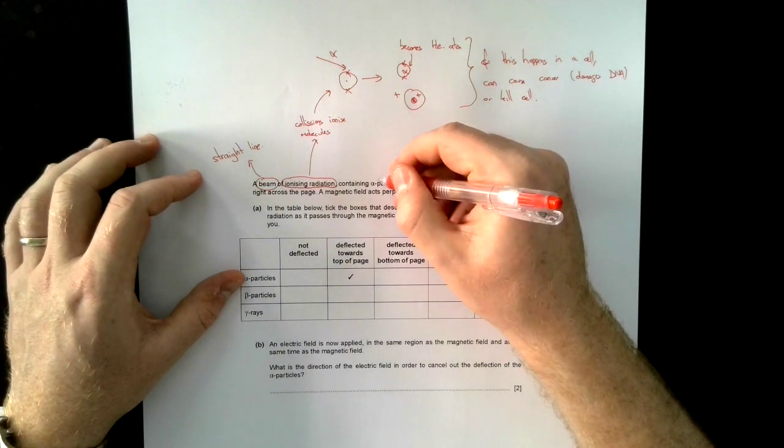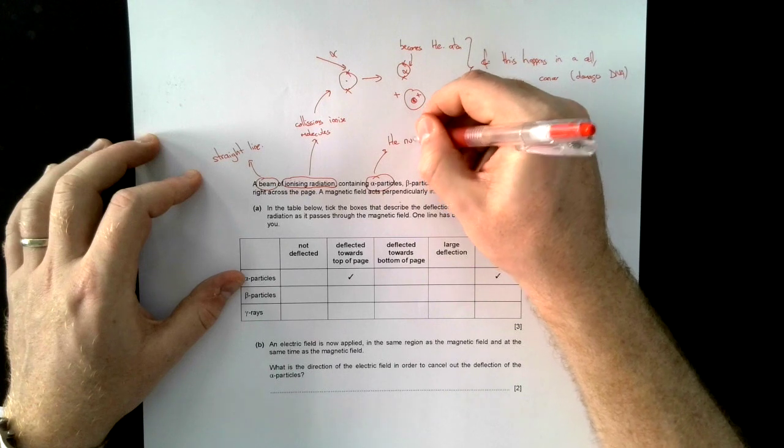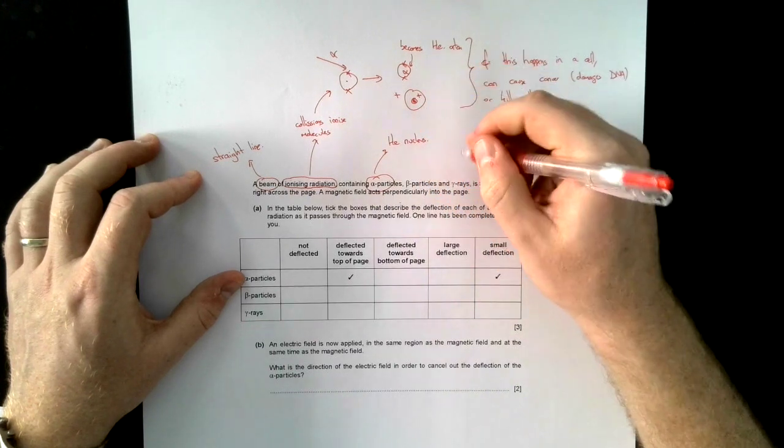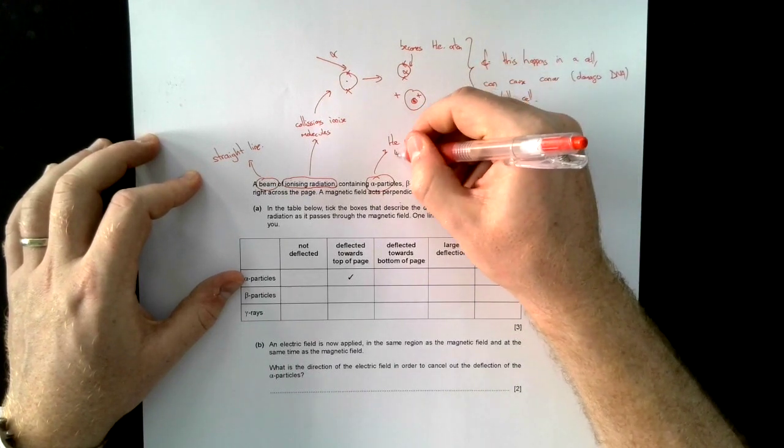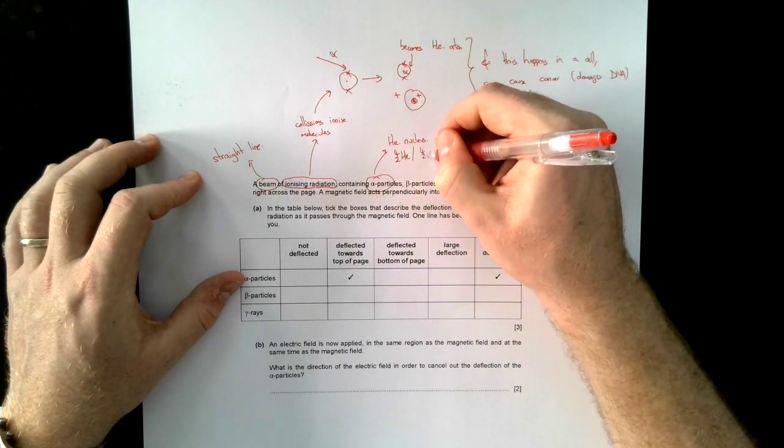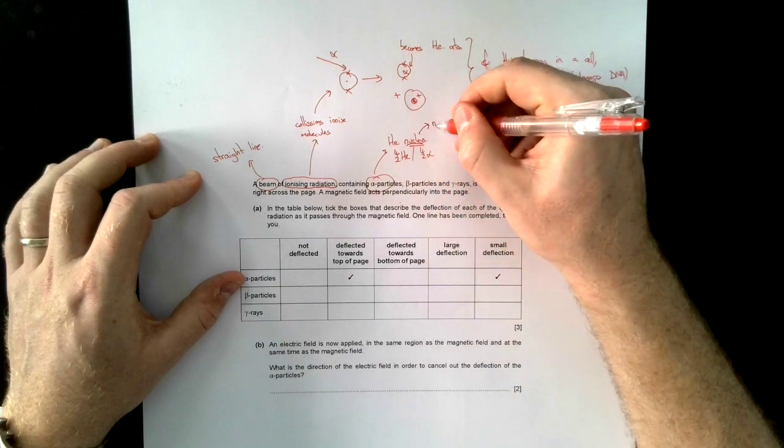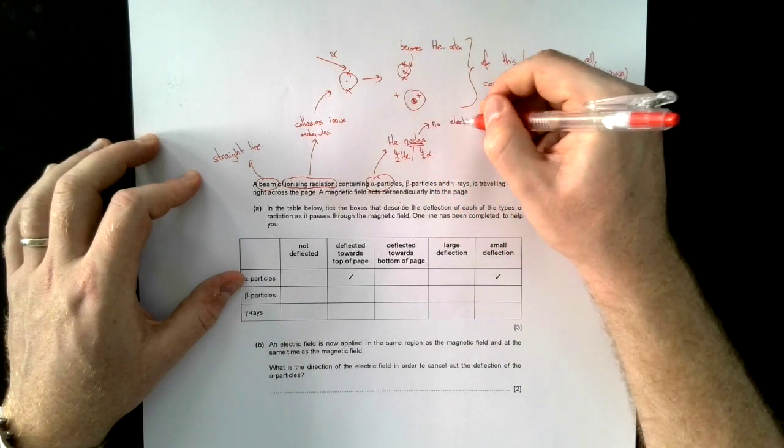And it says containing alpha particles. So we should remember that alpha particle is a helium nucleus. And it has the symbol 4, 2, HE or 4, 2, alpha. I'm going to underline nucleus. And remember, there are no electrons.